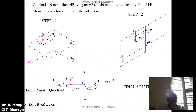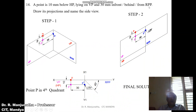In the fourth quadrant, the point is below HP and must be in front of VP. In front of VP means in front of RPP, which means it will be the left side view. So for the fourth quadrant case, this point will give us the left side view.